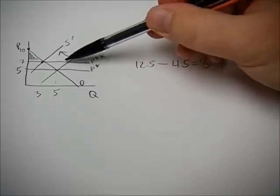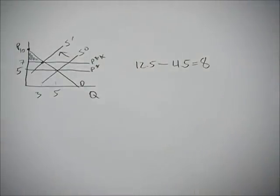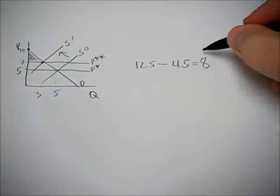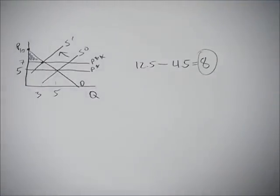So whether it's demand shifting or supply shifting, all you're doing is calculating areas of triangles and then subtracting one from the other to get your difference in that consumer surplus.